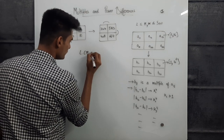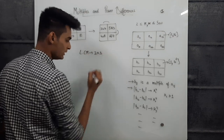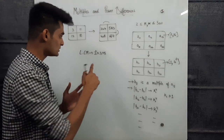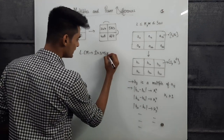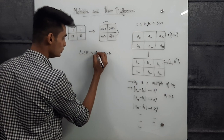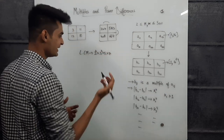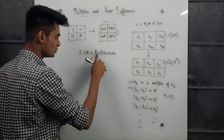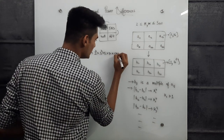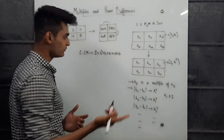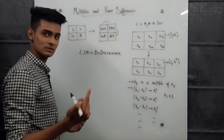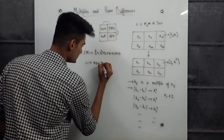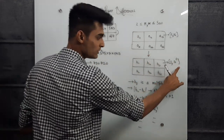Computing the LCM of 1 to 16: we include 2, then ×3, then 2^2 for 4, ×5 for 5, 6 is already covered, ×7 for 7, 2^3 for 8, 3^2 for 9, 2×5 for 10, ×11 for 11, 12 covered, ×13 for 13, 14 covered, 15 covered, 2^4 for 16. This gives LCM = 720720, which is less than 10^6.